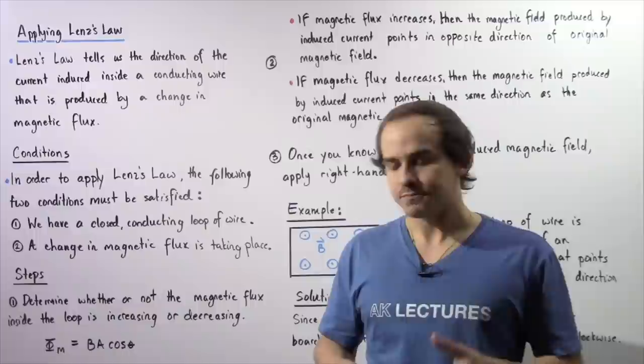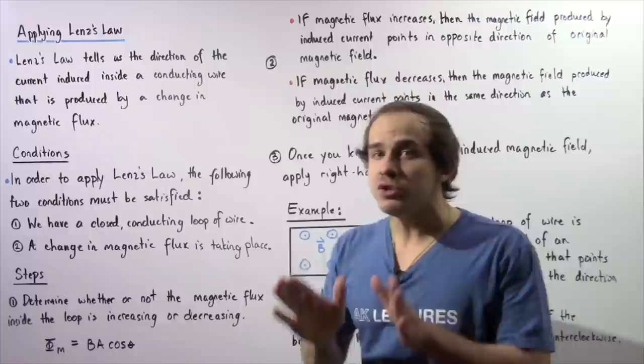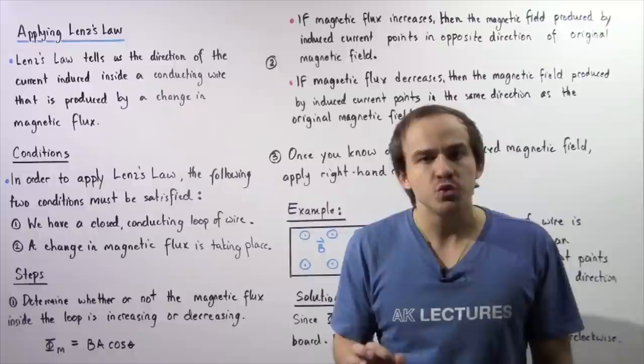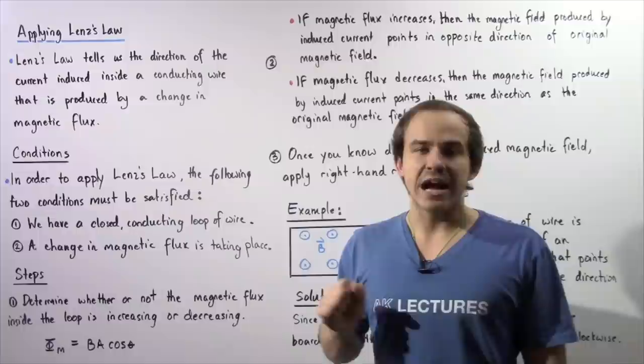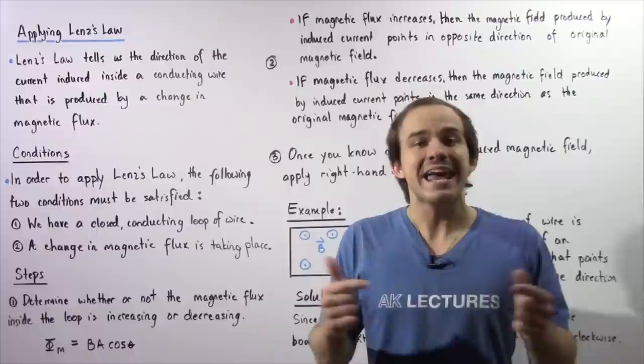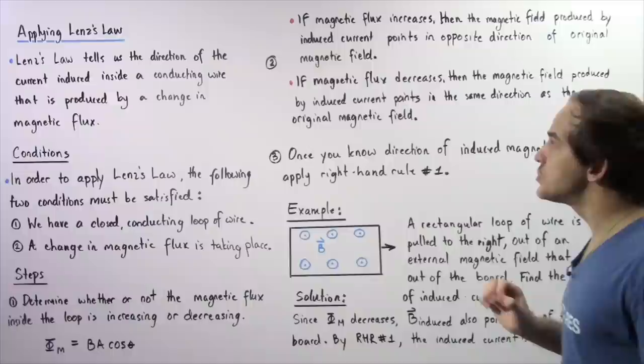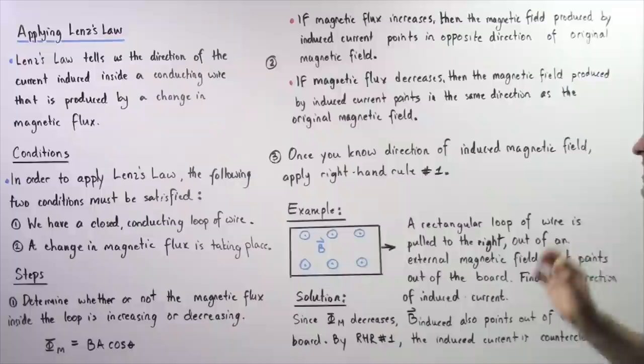This step is sometimes confusing because we are dealing with two different magnetic fields. The external original field is the field that induces an EMF, which produces an induced electric current in the wire. That induced current in turn creates its own induced magnetic field. These two fields either point in the same direction or in the opposite direction depending on whether the flux is increasing or decreasing.